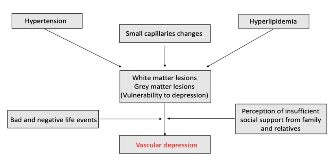Vascular depression is typically diagnosed using either magnetic resonance imaging or clinically defined criteria. MRI-defined vascular depression is more commonly referred to as subcortical ischemic depression and emphasizes the relationship between MRI identification of lesions in the brain and depressive symptoms. An alternative definition is depression executive dysfunction syndrome and focuses on the link between clinical symptoms of cardiovascular risk and depressive symptoms.